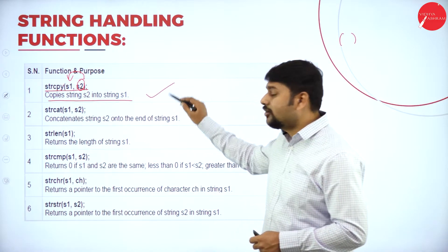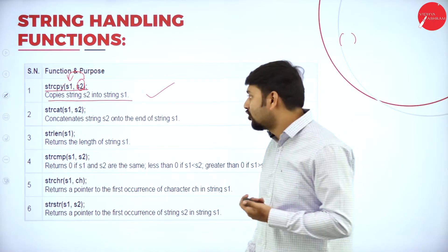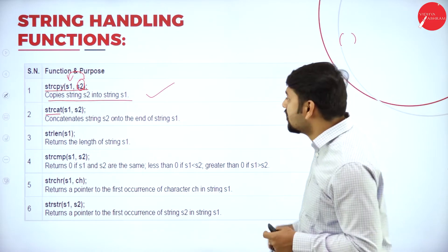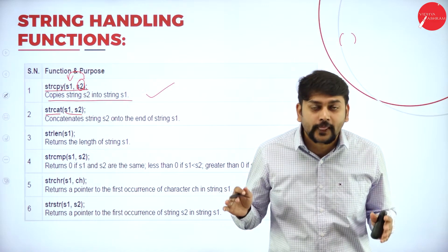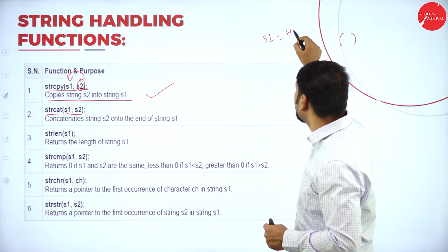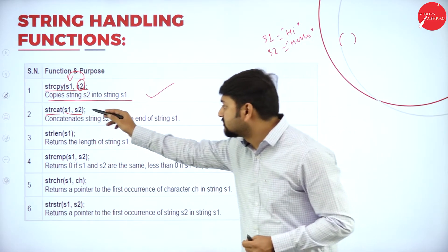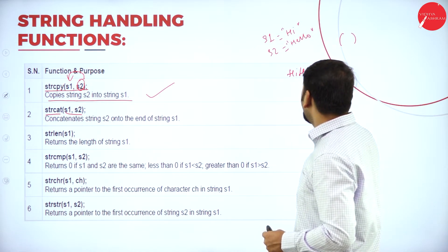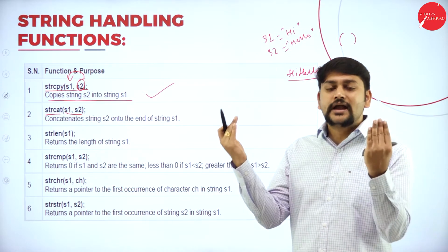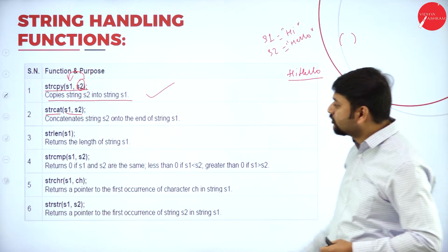The next function is strcat — string concatenate. It takes two parameters: s1 and s2. For example, if s1 equals 'hi' and s2 equals 'hello', after calling strcat, my output will be 'hi hello'. Concatenation means adding two strings together.